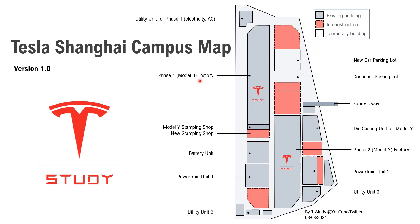This is the first version I created. We can go through these buildings one by one. The first building is a utility building for phase one. It provides electricity and air conditioning. The building has heat exchangers on its roof, so it's very easy to identify. It provides AC through circulating either hot or cold water in the pipeline. You can actually trace the pipeline out of this building to see which buildings it is supporting.